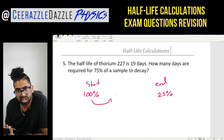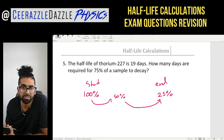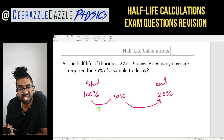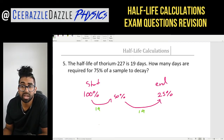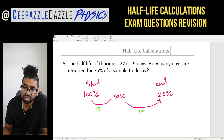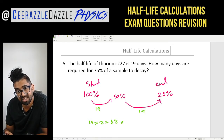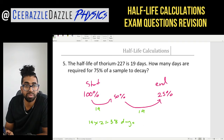The first half-life brings us from 100% to 50%, and the second half-life brings us to 25%. Each half-life is 19 days, so two half-lives are needed. The total time required is 19 times 2, which equals 38 days.